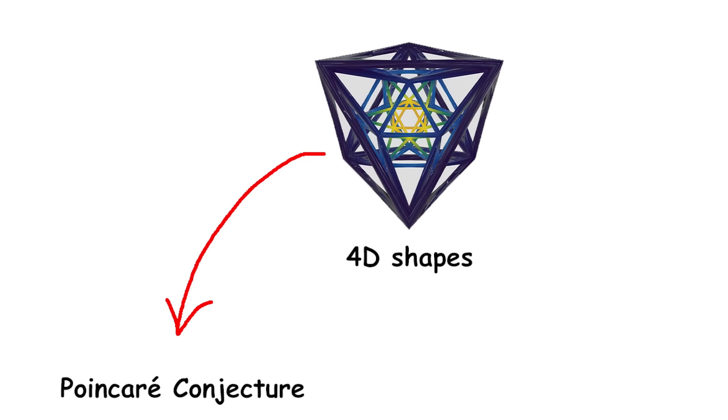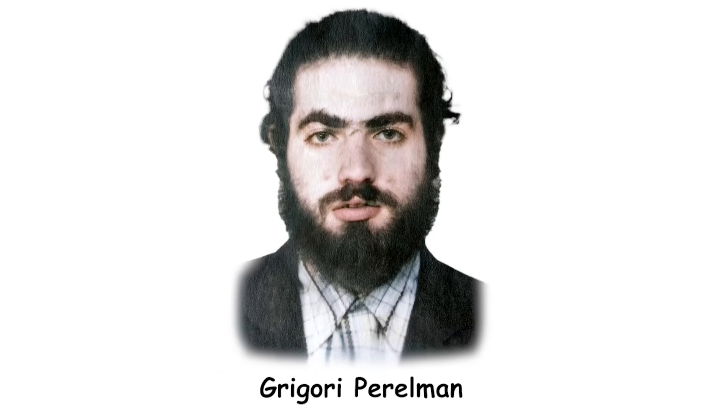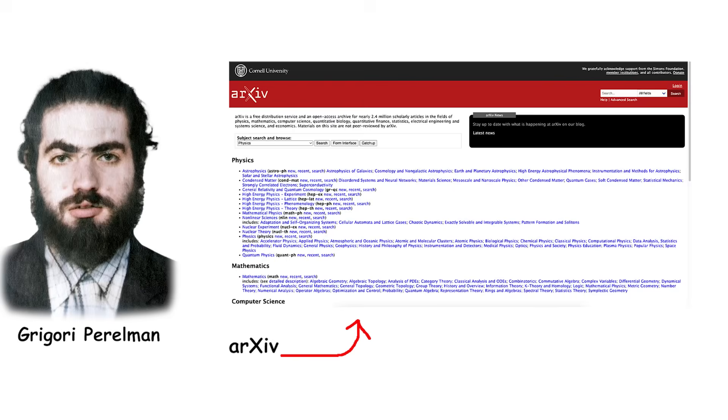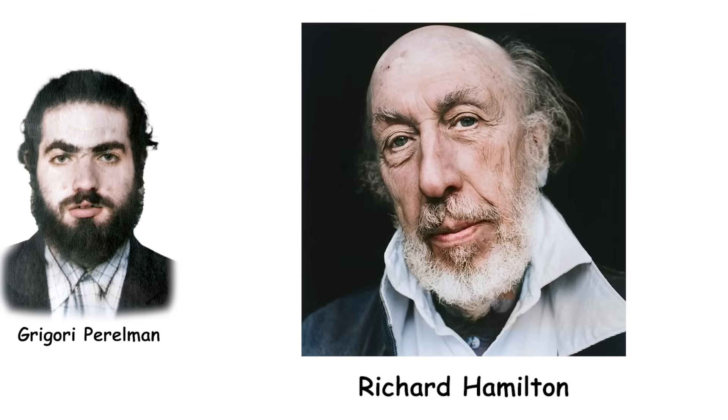About 100 years after Poincaré came up with his idea, a Russian mathematician named Grigory Perelman found a way to prove it. In 2003, Perelman posted his proof on a website called ArXiv, which is where scientists share their work. Perelman's proof was really important and groundbreaking, but it also had a few small problems that needed to be fixed. Perelman's proof also used a lot of the work done by another mathematician, an American named Richard Hamilton.